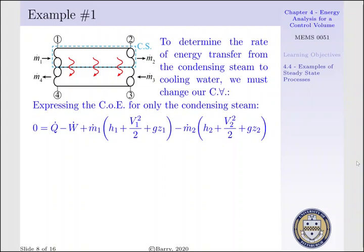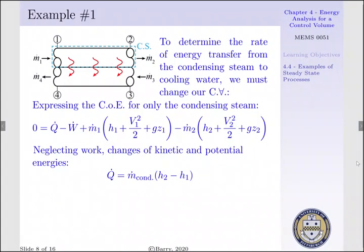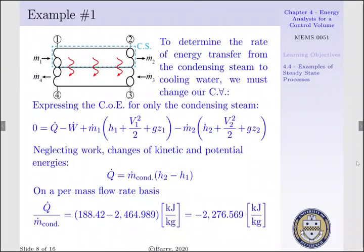For the modified control volume, the time rate of change of energy equals zero, which equals heat supplied less work done, plus mass flow rate in carrying enthalpy, kinetic, and potential energy, less mass flow rate out carrying enthalpy, kinetic, and potential energy. Neglecting work — a very important assumption — as well as changes in kinetic and potential energies, the heat rejected equals the mass flow rate of condensing steam times (H2 − H1). On a per-mass basis, the heat rejected per mass flow rate is simply the difference of enthalpies, giving 2,276.569 kJ/kg rejected.